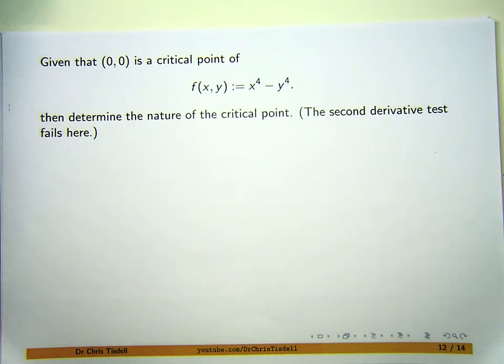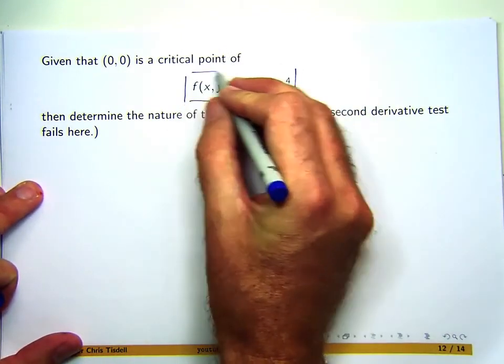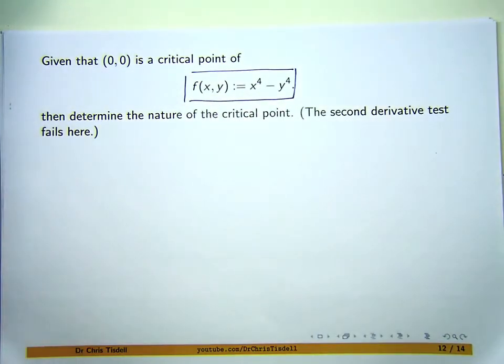This is a question from functions of two variables, so-called multivariable calculus. We're given the following information: we're told that the origin is a critical point of this function here. We're asked to determine the nature of the critical point, and the important thing here is that the second derivative test fails for this particular example, so you can't use the second derivative test.